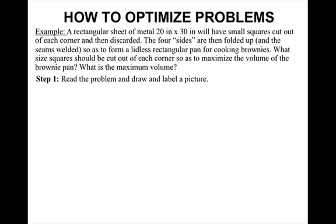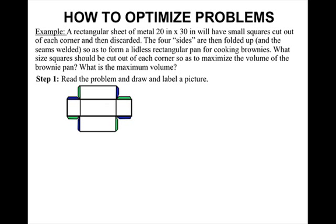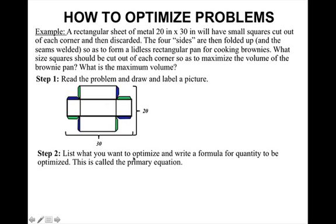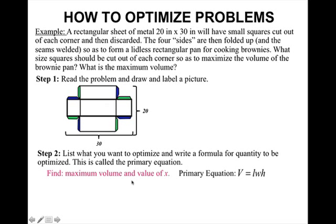So the first thing, step one, is to always read the problem and draw and label a picture. Here is my brownie pan with the size cut out. I'm going to list what you want to optimize and write a formula for the quantity to be optimized — this is called the primary equation. I want to find the maximum volume and the value of x. My primary equation will be the volume of the pan, which is rectangular, so volume equals length times width times height.